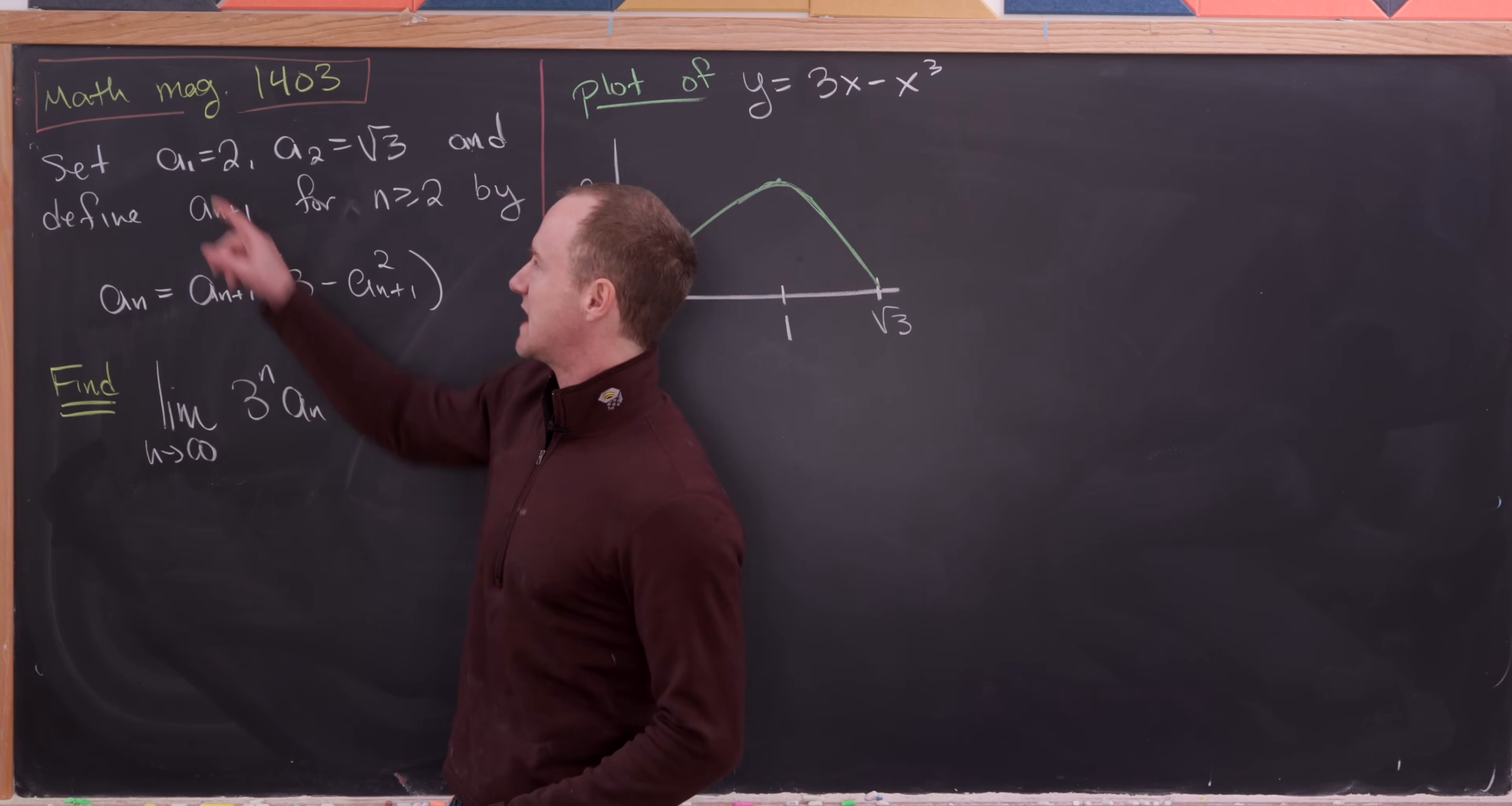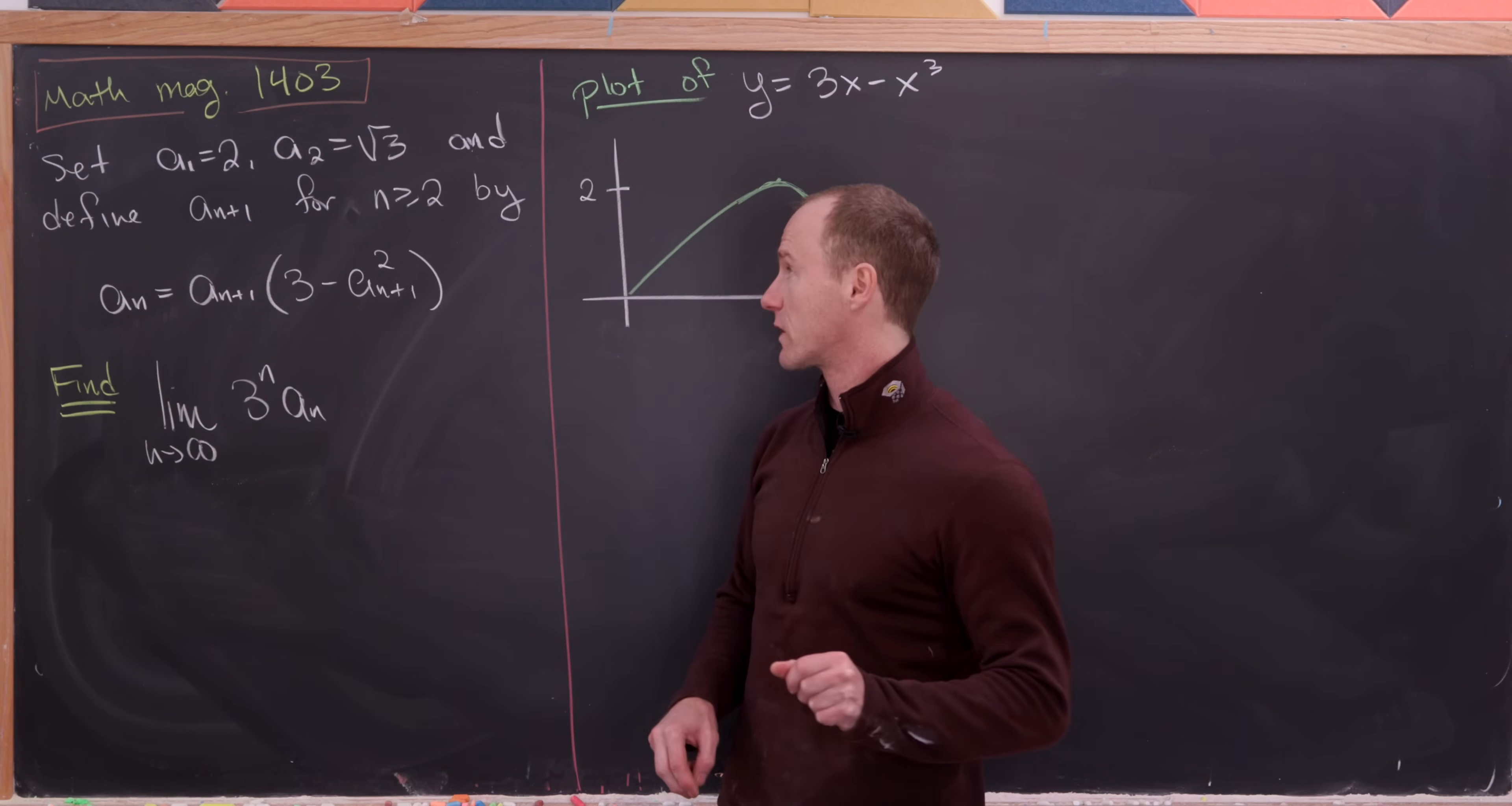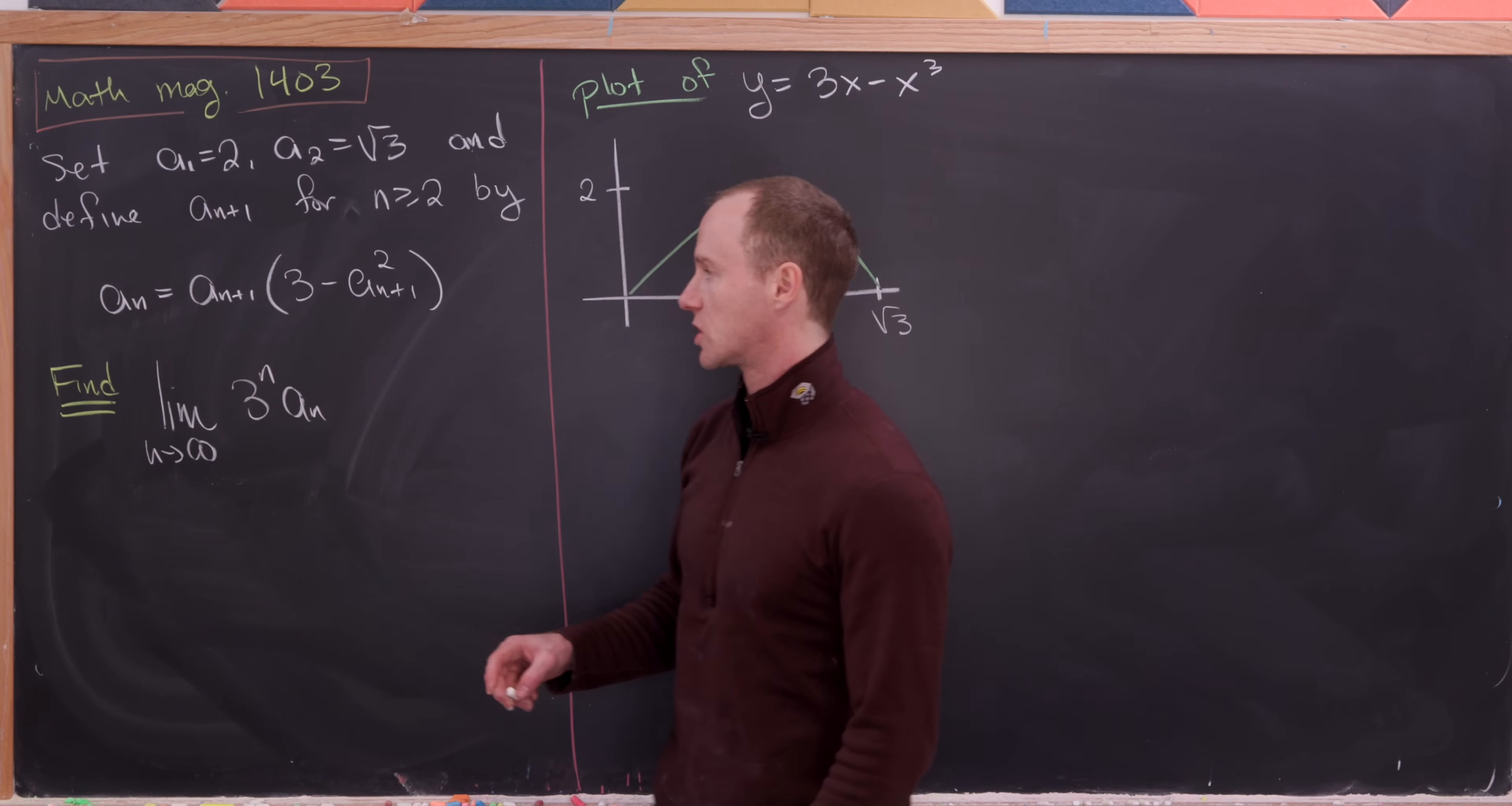So let's set a sub 1 equal to 2, a sub 2 equal to the square root of 3, and then we'll define a_n+1 by this recursion.